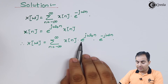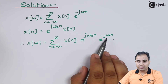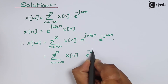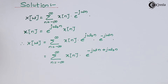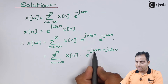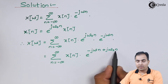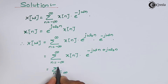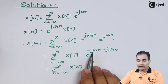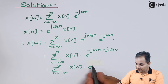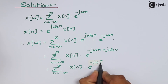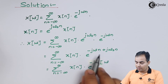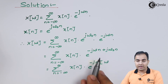Now look at it: if the bases are the same then we can add the powers. From the exponent I can take minus j omega n and plus j omega naught n. I am going to take minus j n common from this whole power. So what you will get is omega — this omega will carry the positive sign, whereas this omega naught will carry the negative sign.